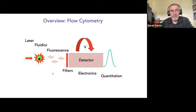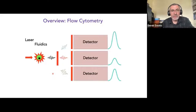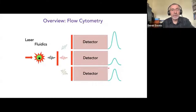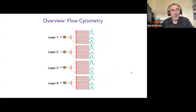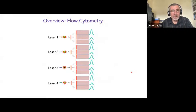Flow cytometers are more versatile than that because we can use a single laser to excite more than one fluorochrome, and for each fluorochrome attached to a different part of the cell we can capture and quantitate the light. Most flow cytometers have multiple lasers — the more lasers we have, the more fluorochromes we can excite, the more things we can measure, the more characteristics of our cells we can measure. This makes flow cytometry a fantastic technique for dissecting heterogeneous populations like peripheral blood.